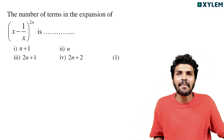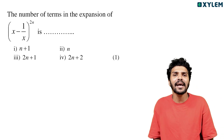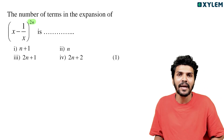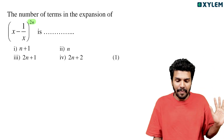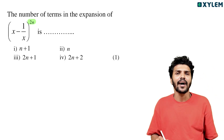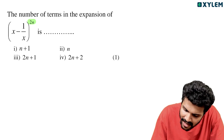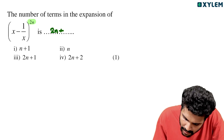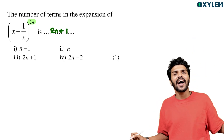First question: the number of terms in the expansion of (x - 1/x) all raised to 2n. It's a binomial expansion — not two terms, x and 1/x. The number of terms is 2n plus 1. This is the answer.